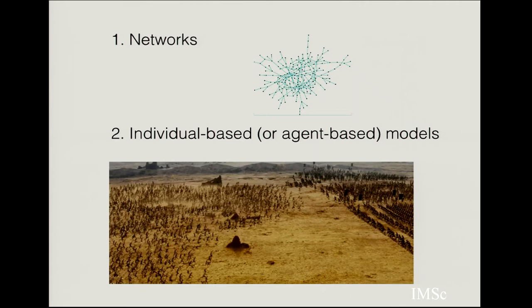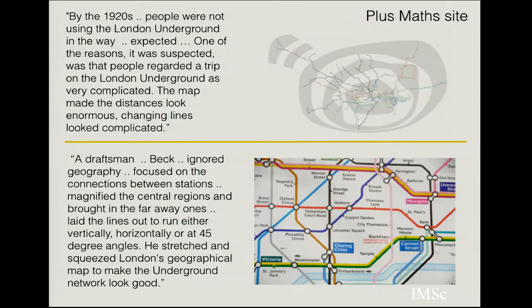I want to talk about two ways of approaching this problem. The first is in terms of networks — a typical example of a network. The second is an individual or agent-based model, illustrated by an example from a movie. The way you do these visualizations nowadays involves the sort of CGI where you simulate many agents with specified properties, let the simulation run, and convert that into images for a movie.